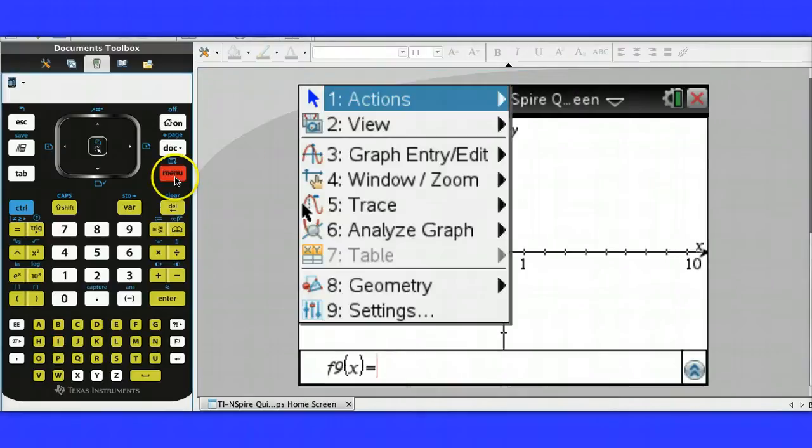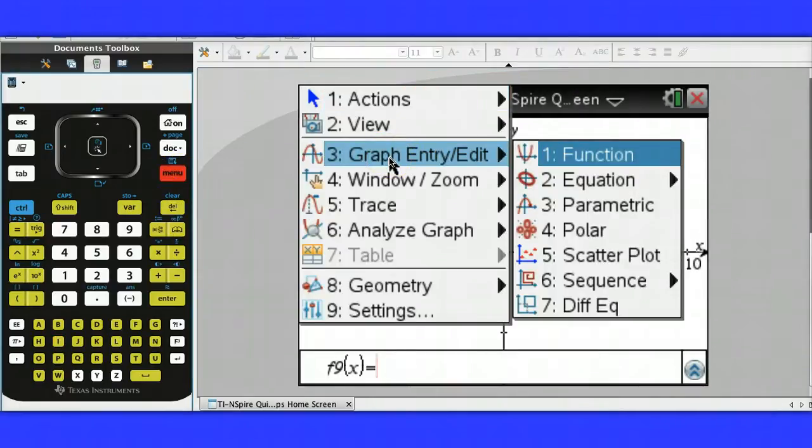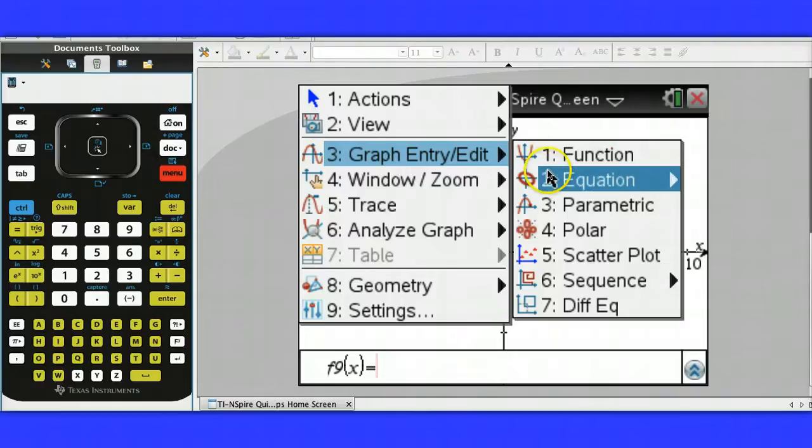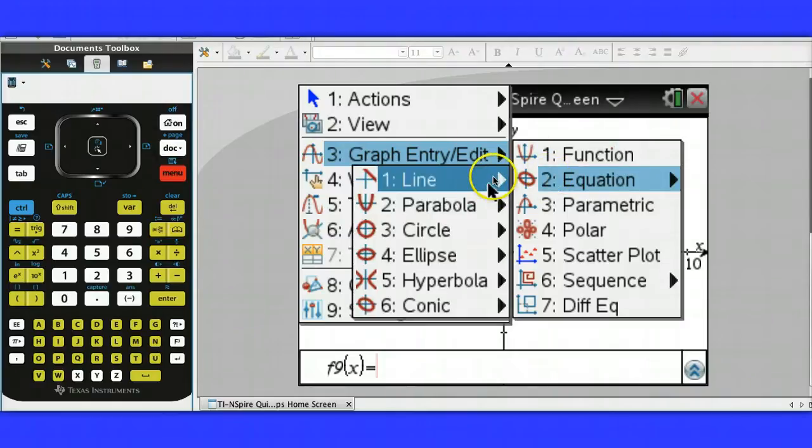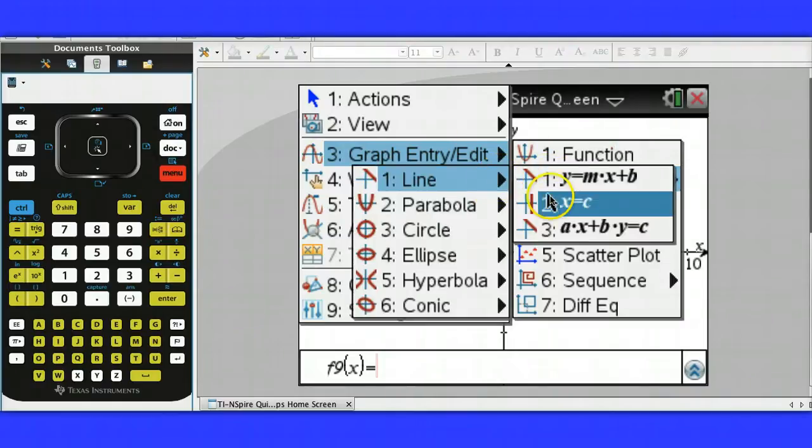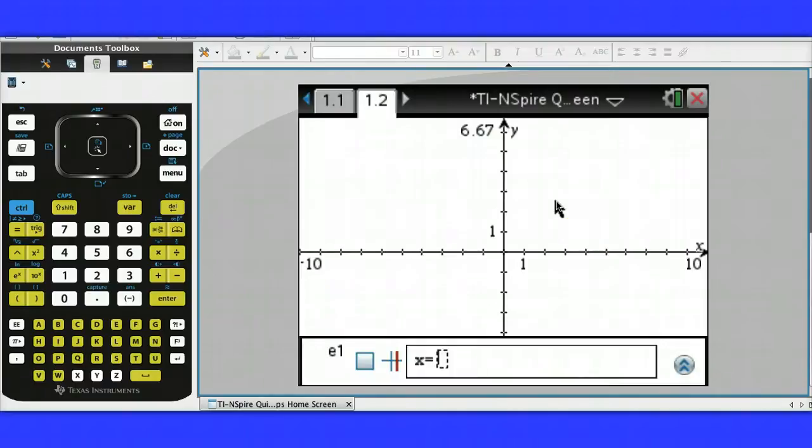So I'm going to insert a graphing page, and from the menu I'm going to choose Graph, Edit Entry, Equation, Line, and notice I have an option here for a vertical line. So we'll graph the vertical line x equals 4.